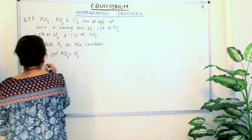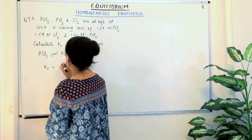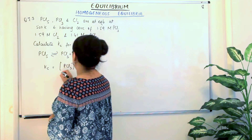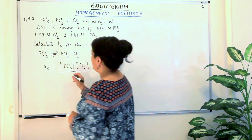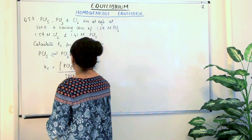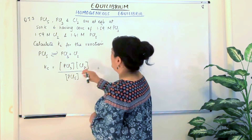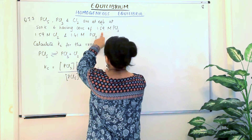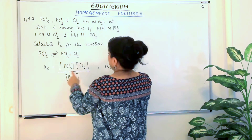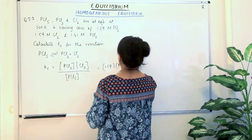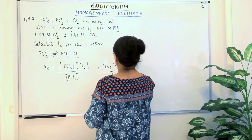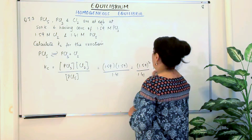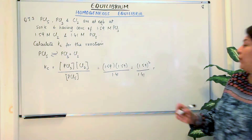So how do you calculate Kc? Kc, the equilibrium constant, is equal to the concentration of the products — that is PCl3 times concentration of Cl2 — there are no stoichiometric coefficients, or the stoichiometric coefficients are 1, so it's to the power of 1 which we don't write — upon the concentration of the reactant PCl5. So this is equal to: PCl3 is 1.59 molar and Cl2 is also 1.59, and PCl5 is 1.41, which means it is 1.59 squared upon 1.41, and when you calculate this, this comes out to be equal to 1.79.